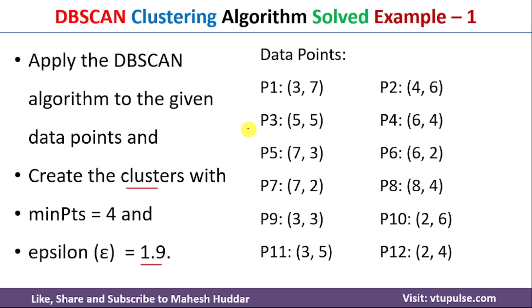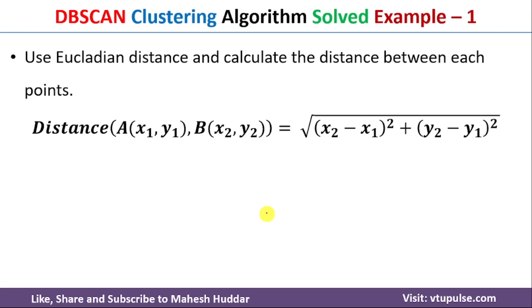The next question is how to calculate the distance between these data points. I am going to use the Euclidean distance formula. Assuming two data points A(x1, y1) and B(x2, y2), the distance between them is given as the square root of (x2 minus x1) squared plus (y2 minus y1) squared.